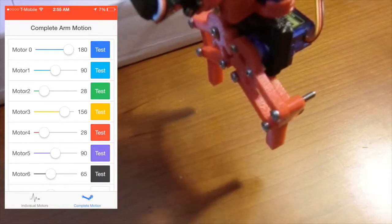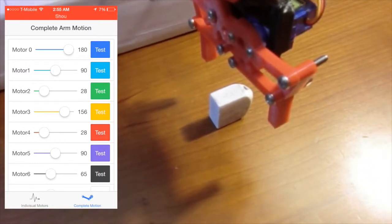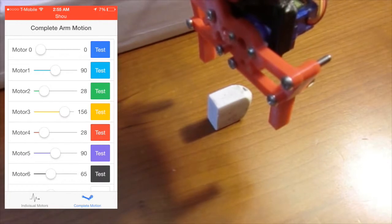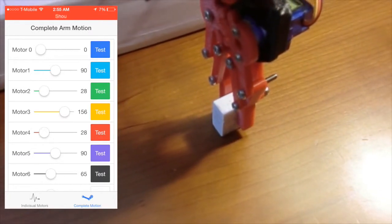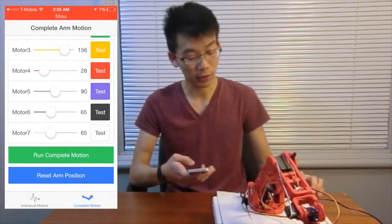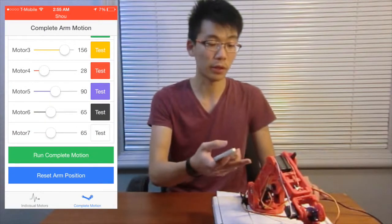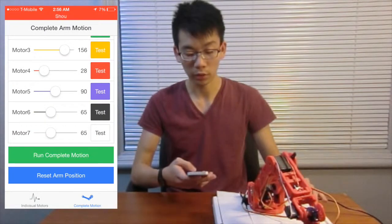As you can see here. And I put the eraser right here. And then I close the motor zero to zero. The hand will close and grab the eraser. And I say reset arm position. It will reset the arm to default position, which is straight up.